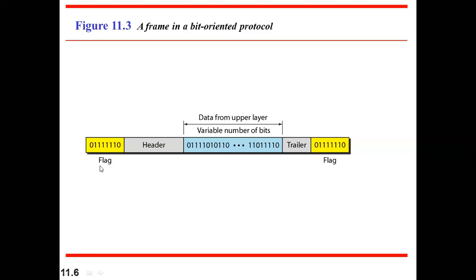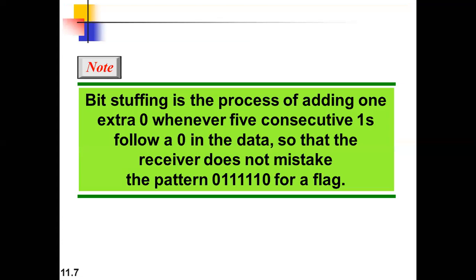The same problem occurs here: if the data also contains the same flag bit pattern, the receiver would think it is the end of a frame when it is not. To solve this, bit stuffing is applied. Bit stuffing is the process of adding one extra zero whenever five consecutive ones are followed by a zero in the data, so the receiver does not mistake that pattern for a flag.